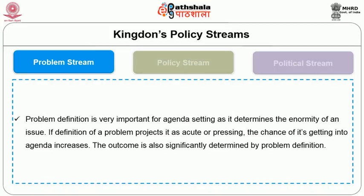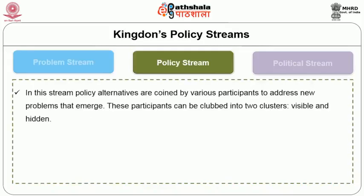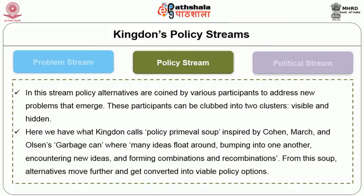Problem stream: According to Kingdon, problem definition is very important for agenda setting as it determines the enormity of an issue. If a definition of a problem projects it as acute or pressing, the chance of its getting onto the agenda increases. The outcome is also significantly determined by problem definition. Policy stream: In this stream, policy alternatives are coined by various participants to address new problems that emerge. These participants can be clubbed into two clusters — visible and hidden. Here we have what Kingdon calls the policy primeval soup, inspired by Cohen, March, and Olsen's garbage can, where many ideas float around, bumping into one another, encountering new ideas, and forming combinations and recombinations. From this soup, alternatives move further and get converted into viable policy options.